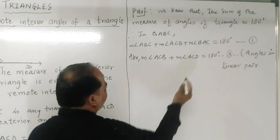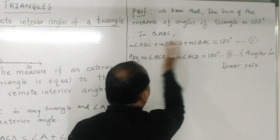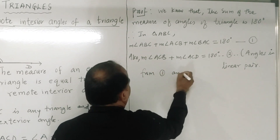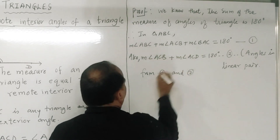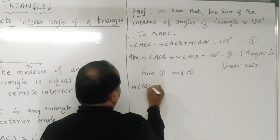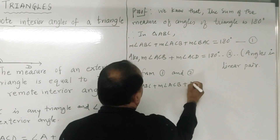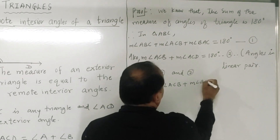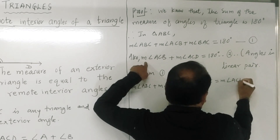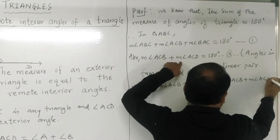Now from equations 1 and 2, the right-hand side of both equations is the same — 180 degrees — so the left-hand sides are also equal. Therefore: measure of angle ABC plus measure of angle BAC plus measure of angle ACB is equal to measure of angle ACD plus measure of angle ACB.